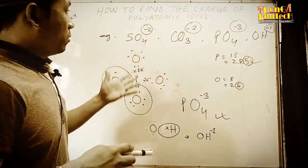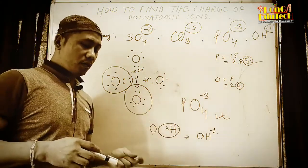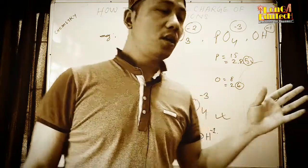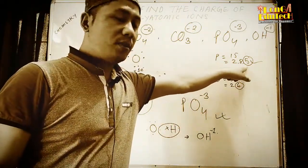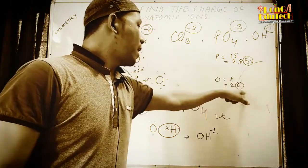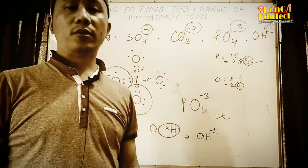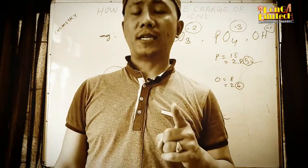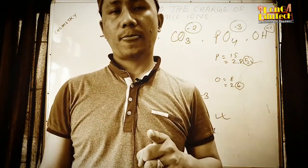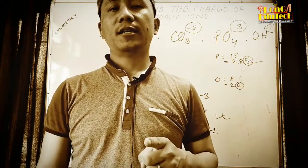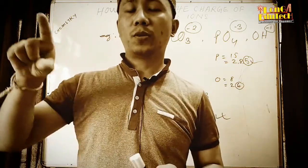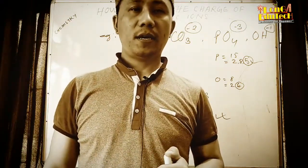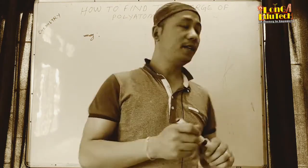To summarize the method: find the electronic configuration of each atom, identify the valence electrons, and see how electrons are shared with the central atom. However many electrons are still required after sharing — that becomes the charge of the polyatomic ion. If atoms have extra electrons to donate, the ion will carry a positive charge.